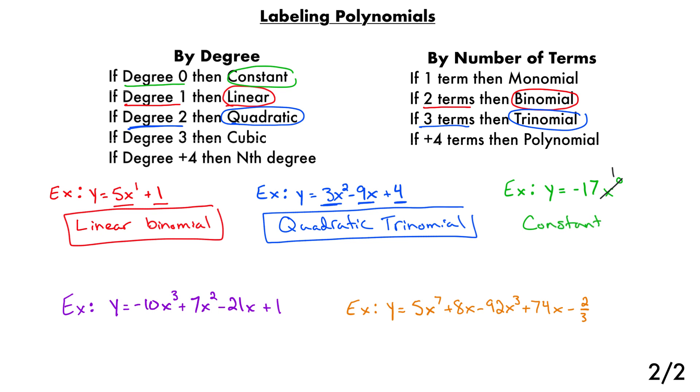Which when you look at the original problem, when I erase the x to the zero component, that kind of makes sense. Because if they say y in this problem, y is equal to negative 17. Well, that's just a constant number. Negative 17 is just negative 17. It doesn't contain these x's or variables. So it's not going to change at all. Therefore, it must be constant.